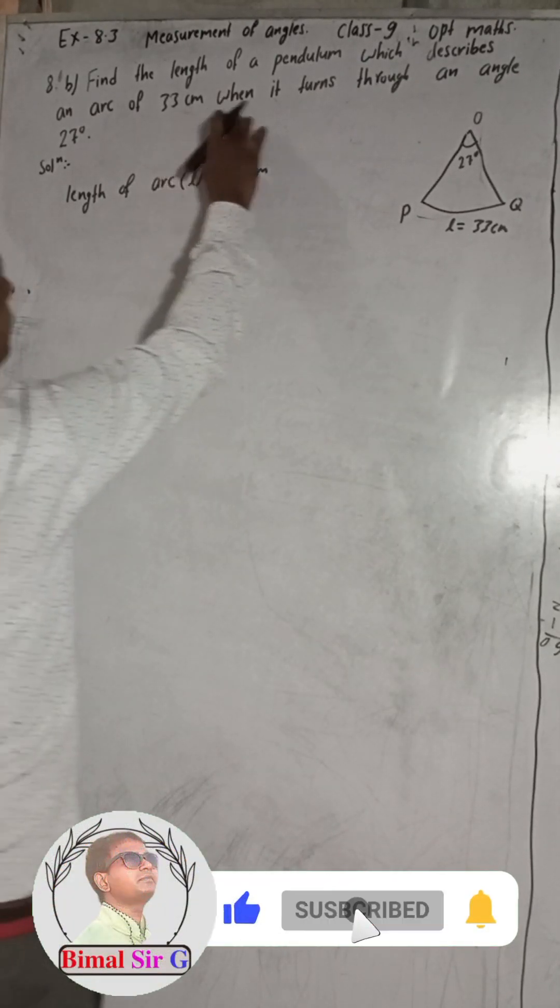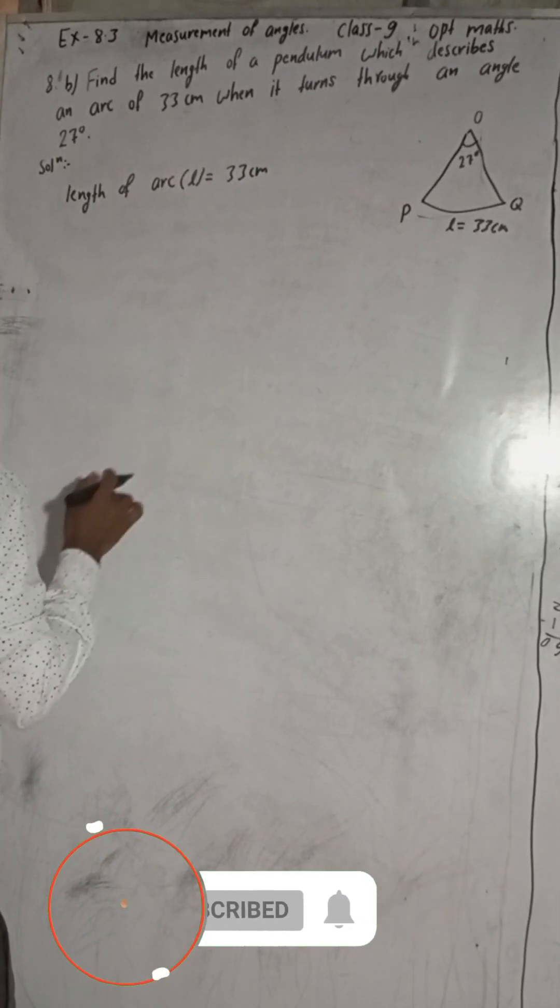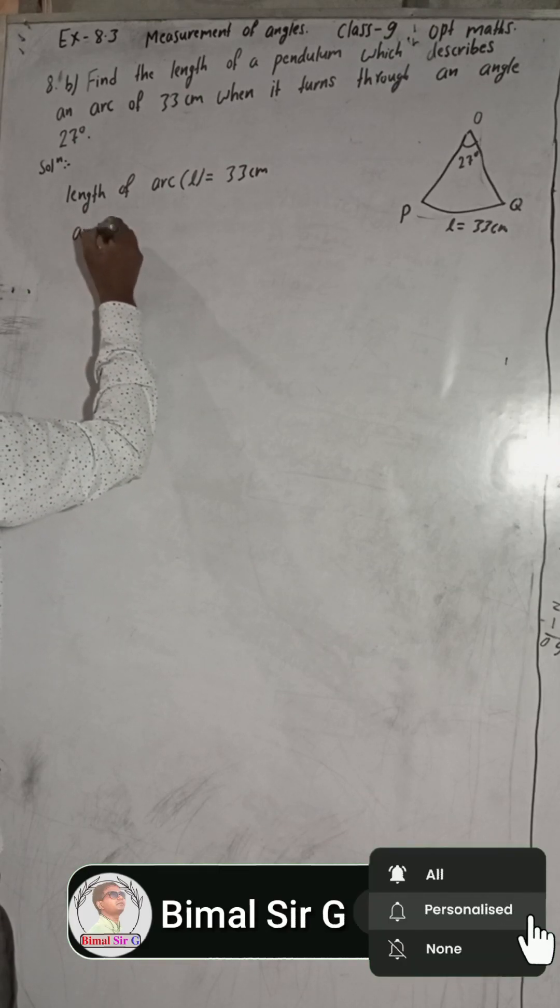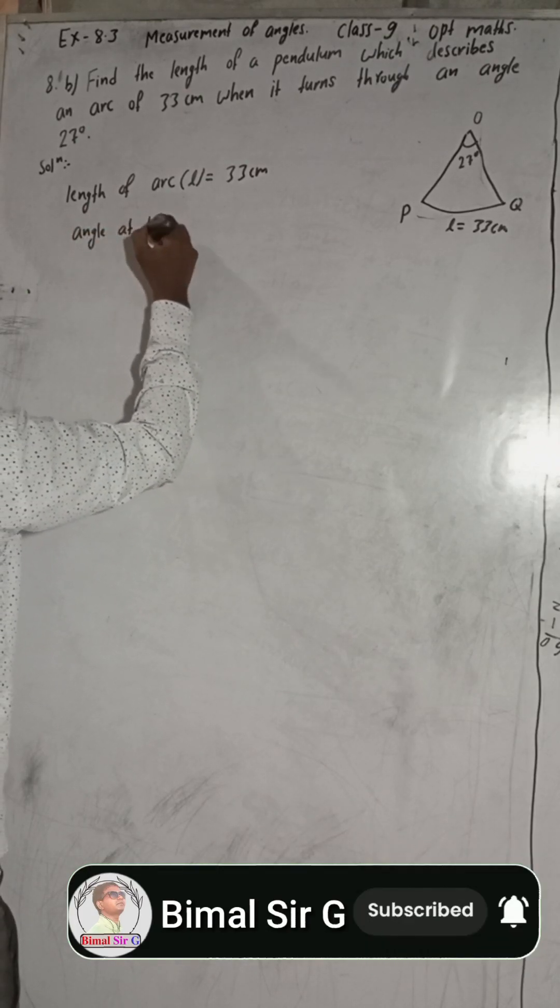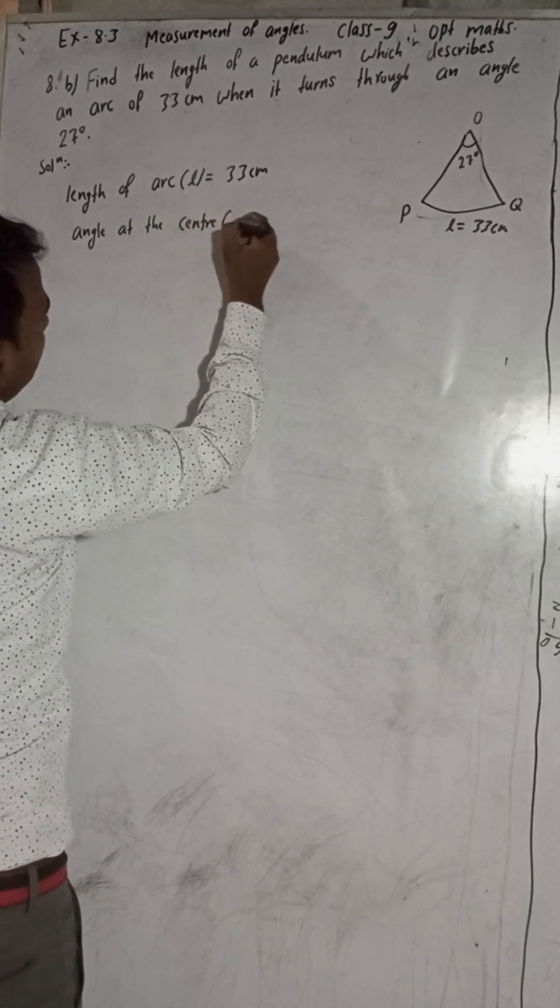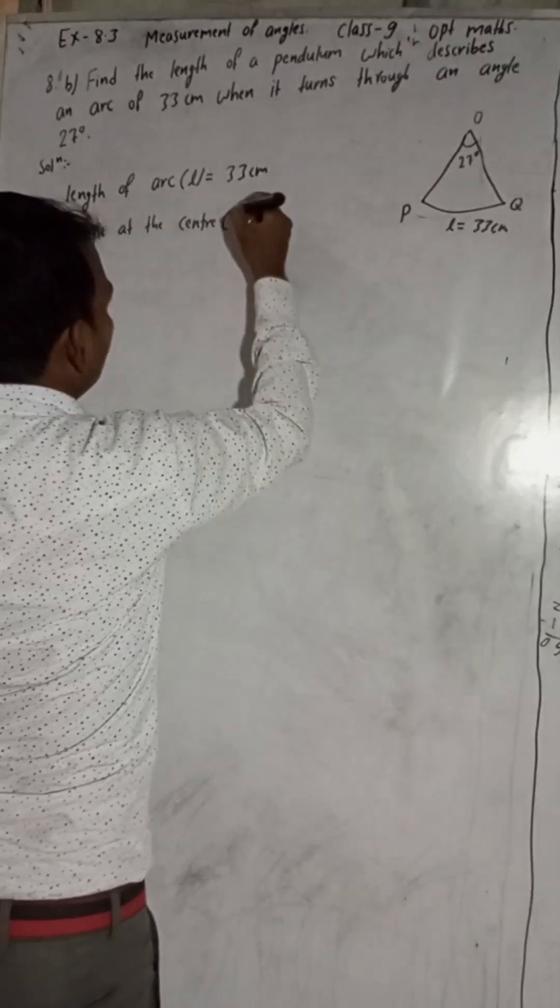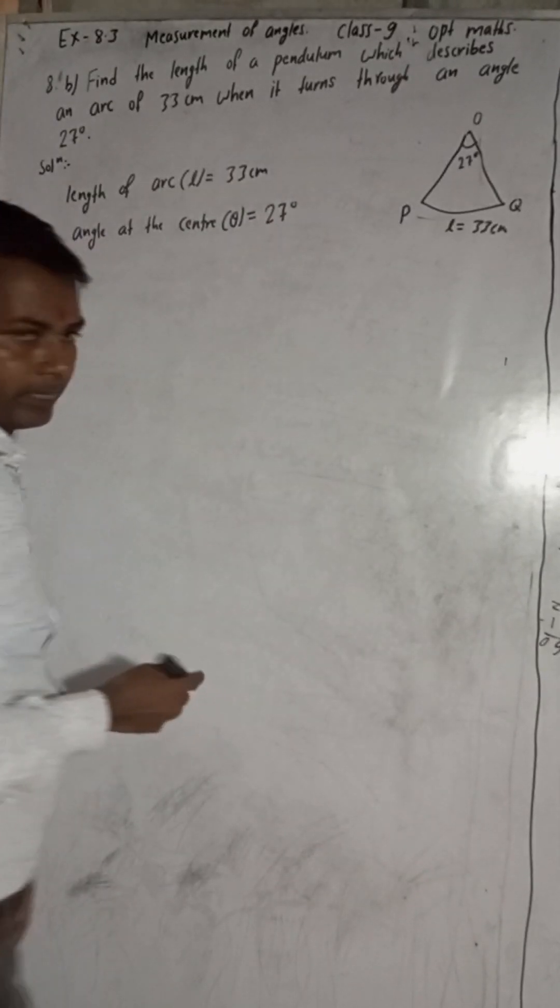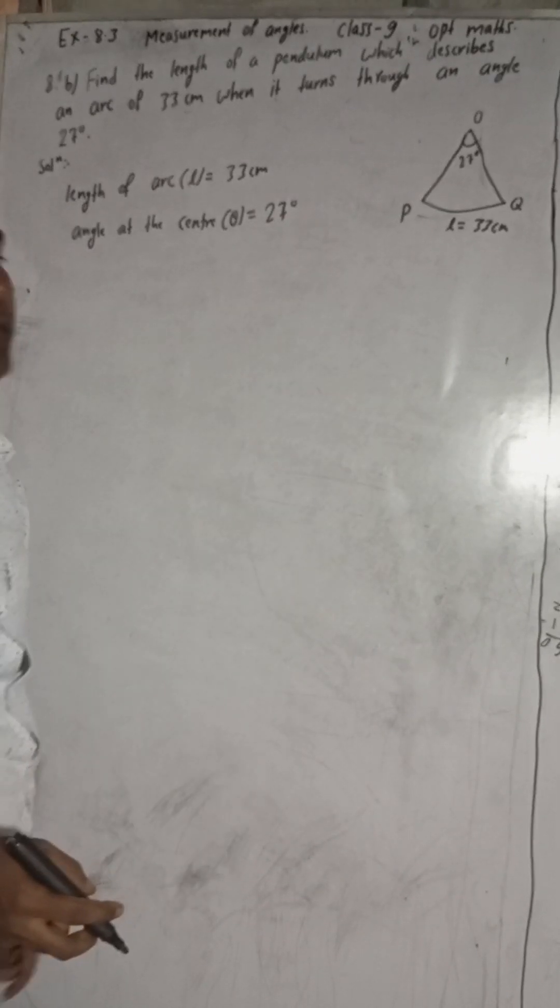And when it turns through an angle, 27 degrees is the angle at the center. Angle at the center is theta equal to 27 degrees. To this 27 degrees we have to change into radian.